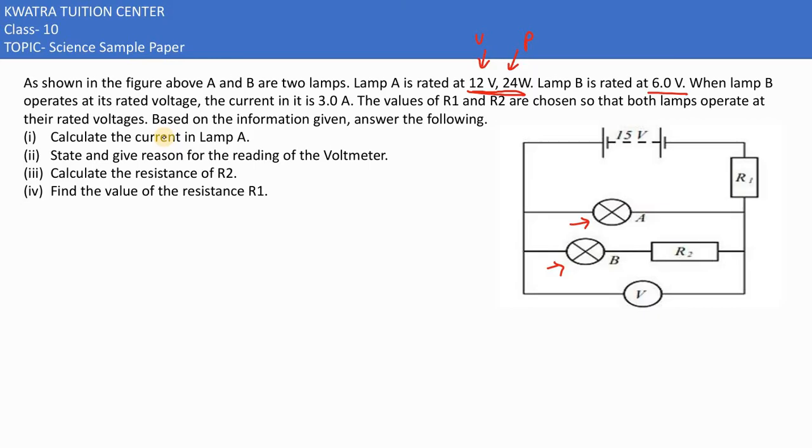6 volt. And they are saying when lamp B operates at its rated voltage, the current in it is 3 ampere. So when lamp B is working, how much current is flowing through it?